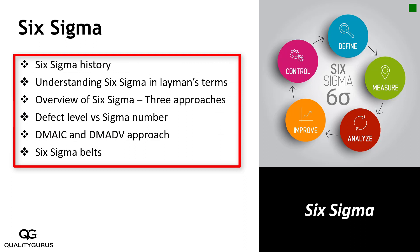Six Sigma in itself is a big topic. There are a number of belts — white belt, yellow belt, green belt, and black belt — and as you go through these belts you learn more and more about Six Sigma. There is a lot of complexity, mathematics, and statistics involved, so if you want to learn this in more detail you can go through these belts.